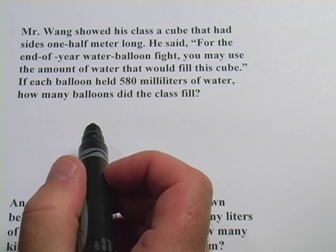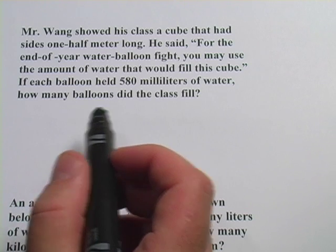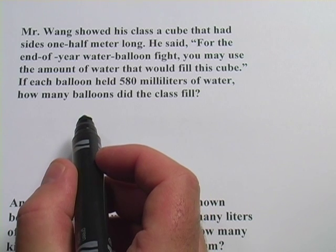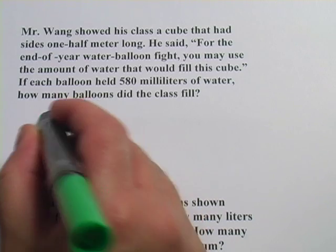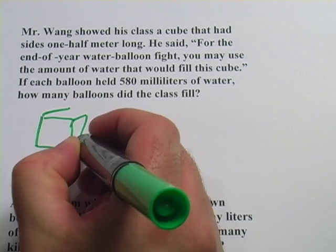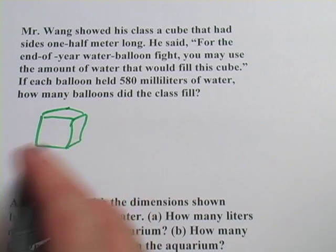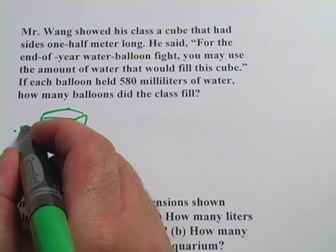Let's look at this first problem. It says Mr. Wang showed his class a cube that had sides one-half meter long. So he's got a cube here, and each side is 0.5 of a meter.